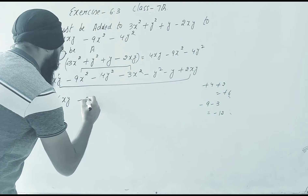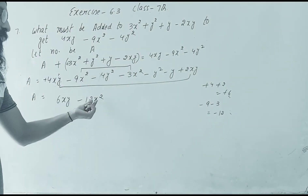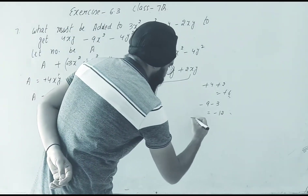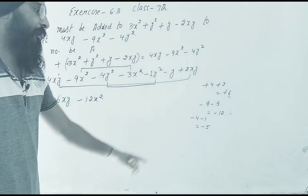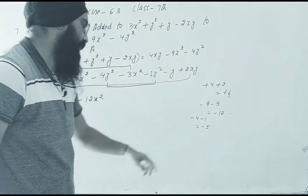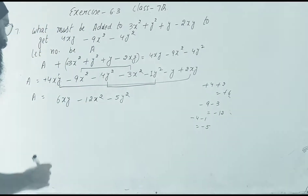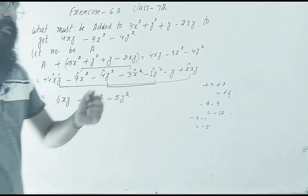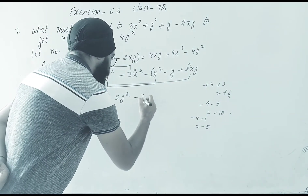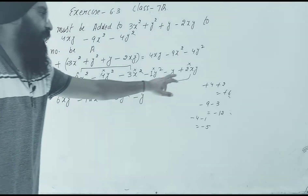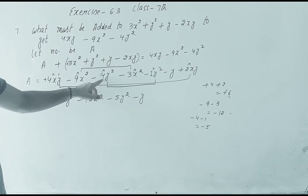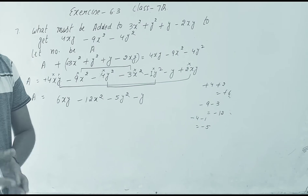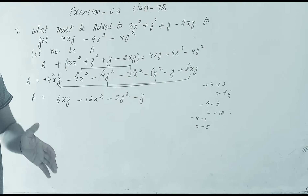That is minus 12x². Next is y² terms: -4y² minus 1y² — the result is -5y². Then for xy: 4xy plus 6xy gives 6xy. This is finished. For the y term, there is no like term, so it remains as -y.